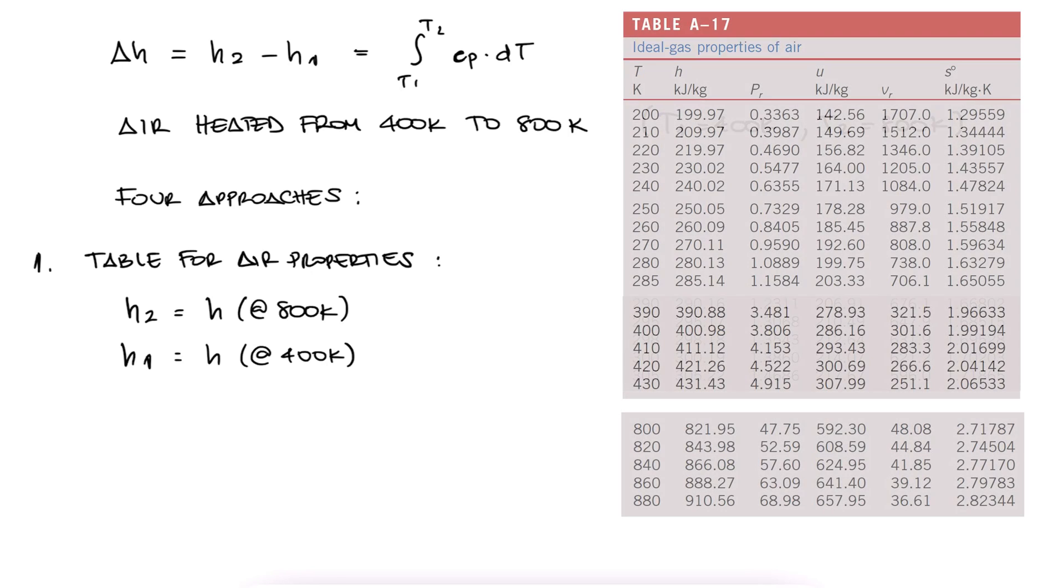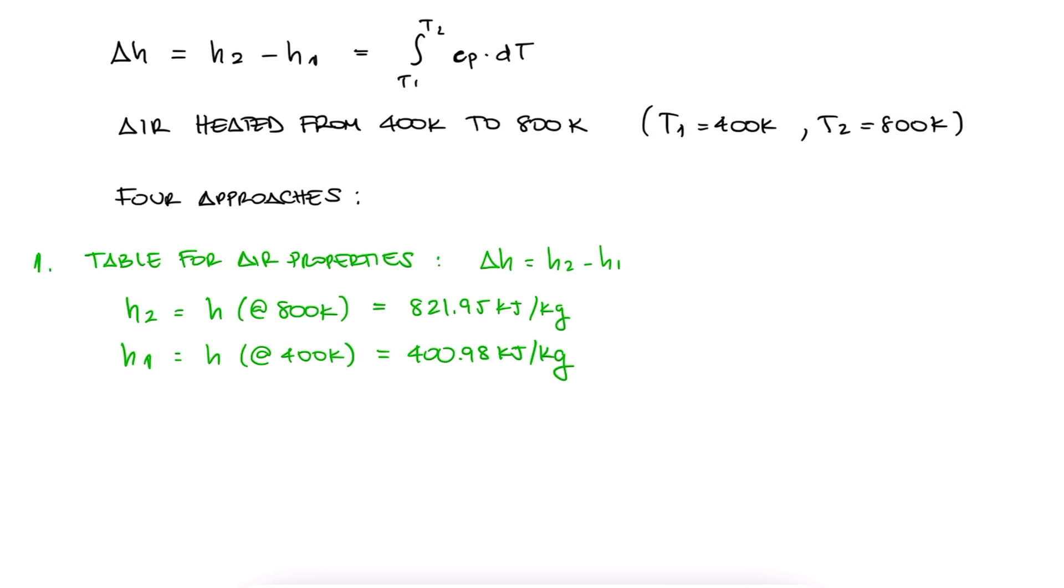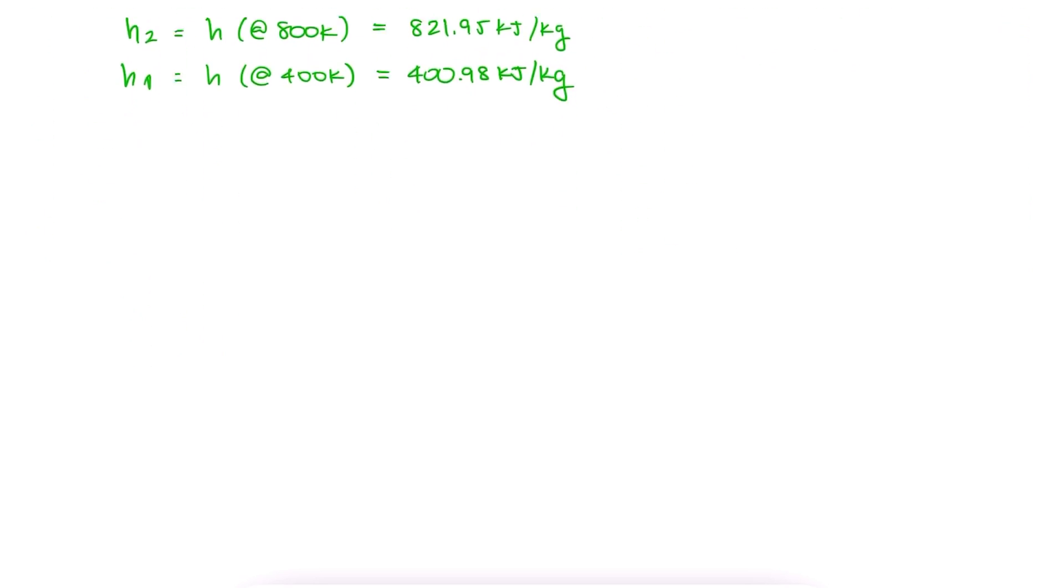From the ideal properties of air table, we see that the enthalpy at 400K is 400.98 kJ per kilogram and 821.95 kJ per kilogram at 800K. Therefore, the change in specific enthalpy is 420.97 kJ per kilogram.